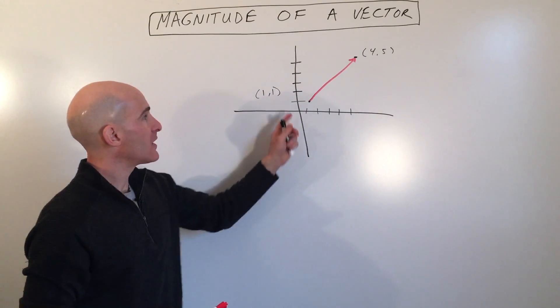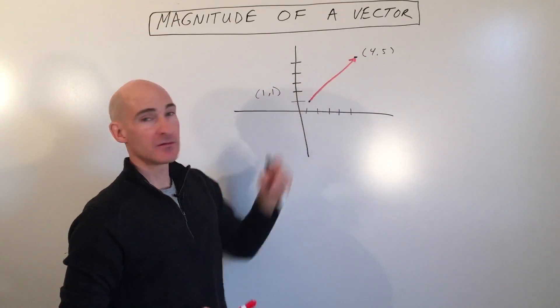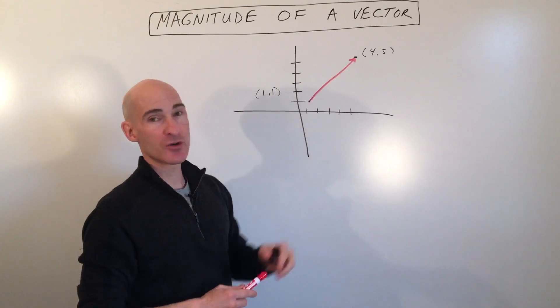So here we've got two points. I've drawn the vector from the initial point to the terminal point.